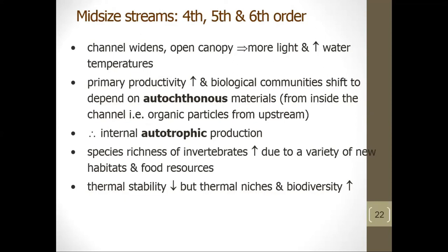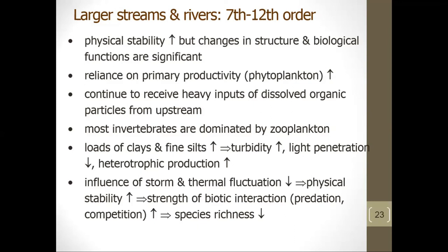As one proceeds downstream to fourth-, fifth-, and sixth-order streams, the channel widens, increasing incident sunlight and average temperatures. Levels of primary production increase in response to greater light, shifting many streams toward dependence on autochthonous material — materials produced internally through autotrophic production. Smaller pre-processed organic particles received from upstream sections help balance autotrophic and heterotrophic processes. Species richness of invertebrate communities increases as new habitat and food resources appear, and functional groups such as grazers and collectors increase in abundance. Mid-sized streams also decrease in thermal stability as temperature fluctuations increase, further boosting biotic diversity.